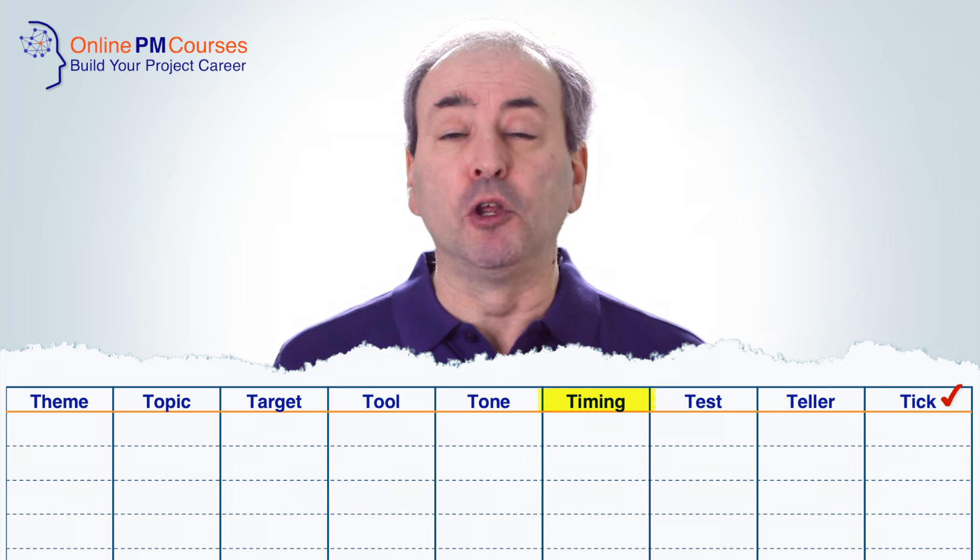Next is timing. Some communications follow a regular cycle like project reports; others come at specific times. So what is the correct timing? If it's a regular communication, what's the frequency? If the project's going to evolve, how might that frequency evolve through the life of the project? If it's a one-off communication, when's the best time to issue it? Think about project events and what the stakeholder is going to be concerned with. The ideal time from your project's point of view may not be ideal from the stakeholder's point of view.